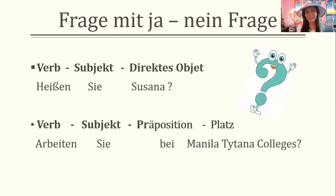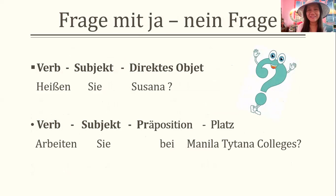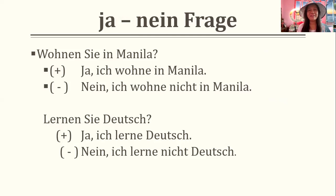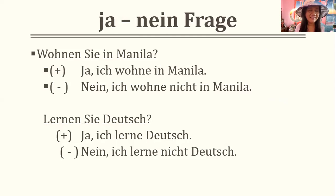How are you going to construct a ja/nein question? You start with the verb, then subject: Heißen Sie Susana? But if there is a preposition: Wo arbeiten Sie? — verb, subject, preposition, place. Arbeiten Sie bei Manila Titana College? How do you give your Bestätigung or Verneinung? Wohnen Sie in Manila? For ja: Ja, ich wohne in Manila. For nein: Nein, ich wohne nicht in Manila. Lernen Sie Deutsch? Ja, ich lerne Deutsch. Nein, ich lerne nicht Deutsch.